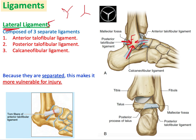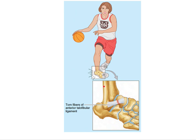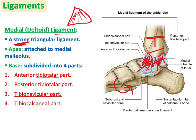Because the lateral ligaments are separated they are weaker and more vulnerable to injury. Among the three, the anterior talofibular ligament is the weakest and most commonly injured. In cases of extreme inversion of the foot, the anterior talofibular ligament is torn. The medial deltoid ligament, by contrast, is so strong that in extreme inversion the fibula may fracture before this ligament tears.